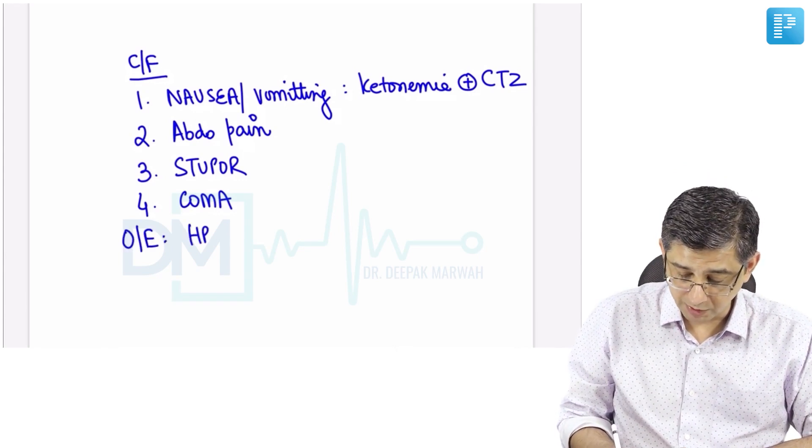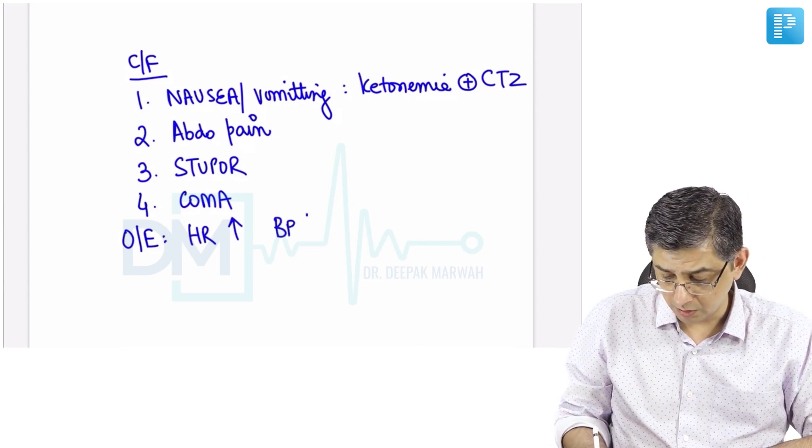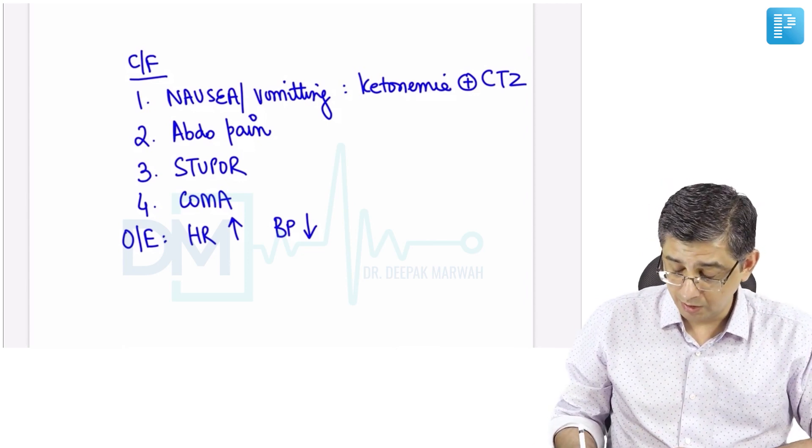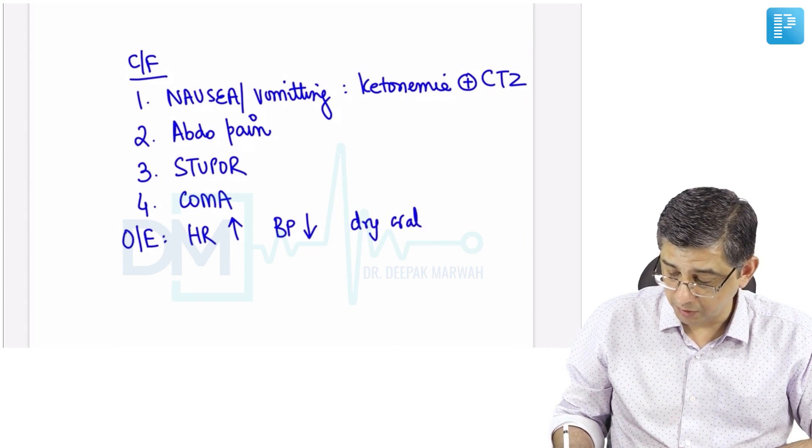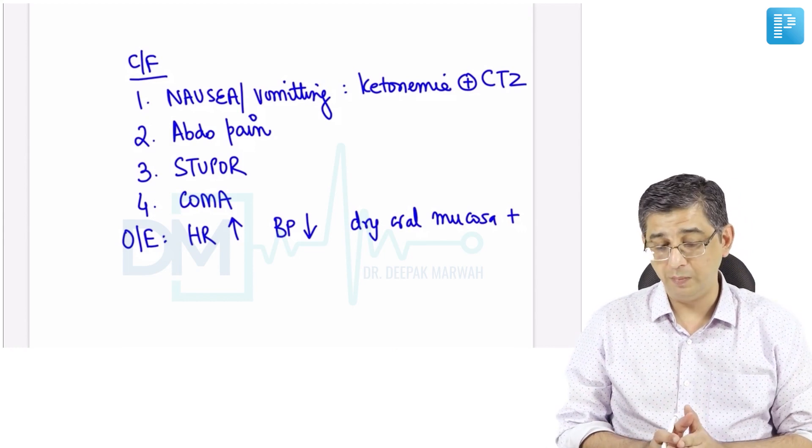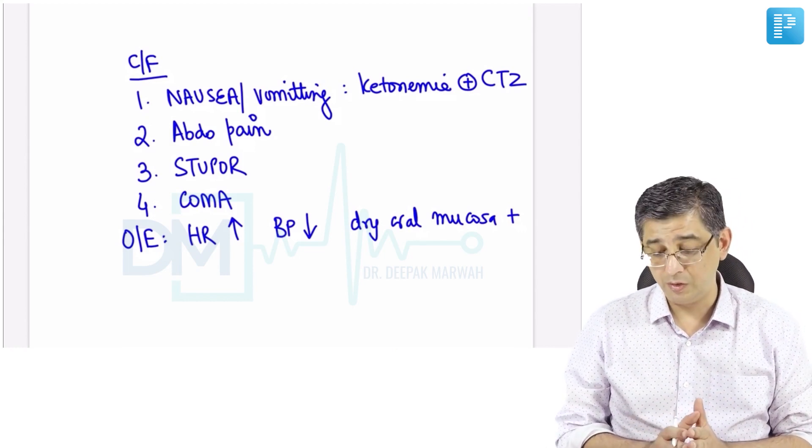When you examine them, you will find substantial tachycardia. Orthostatic hypotension or hypotension uniformly would be present. There would be dry oral mucosa. Urine output will be initially increased, but as dehydration increases the urine output might even begin to reduce, explaining the deranged kidney function found in these patients.